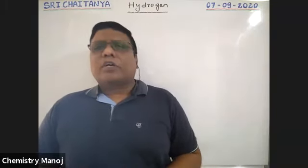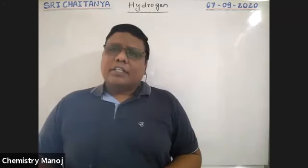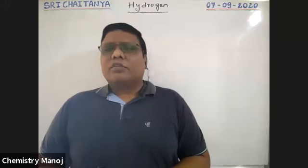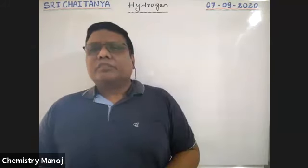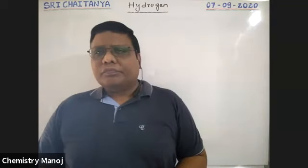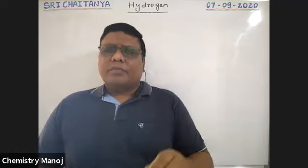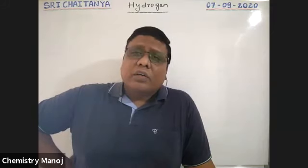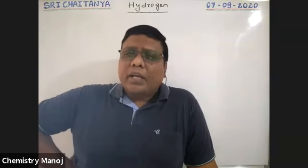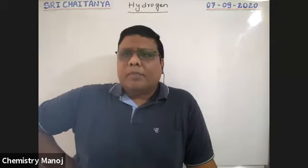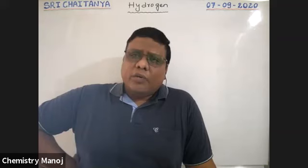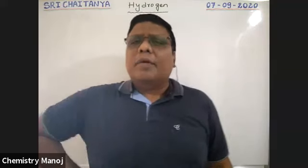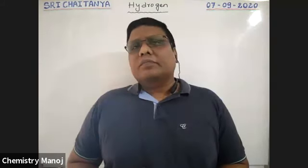Now I am starting. Today we are discussing about hydrogen. What is hydrogen and where is it available? This hydrogen is mainly available in our universe. In the entire universe, the most abundant element is hydrogen.